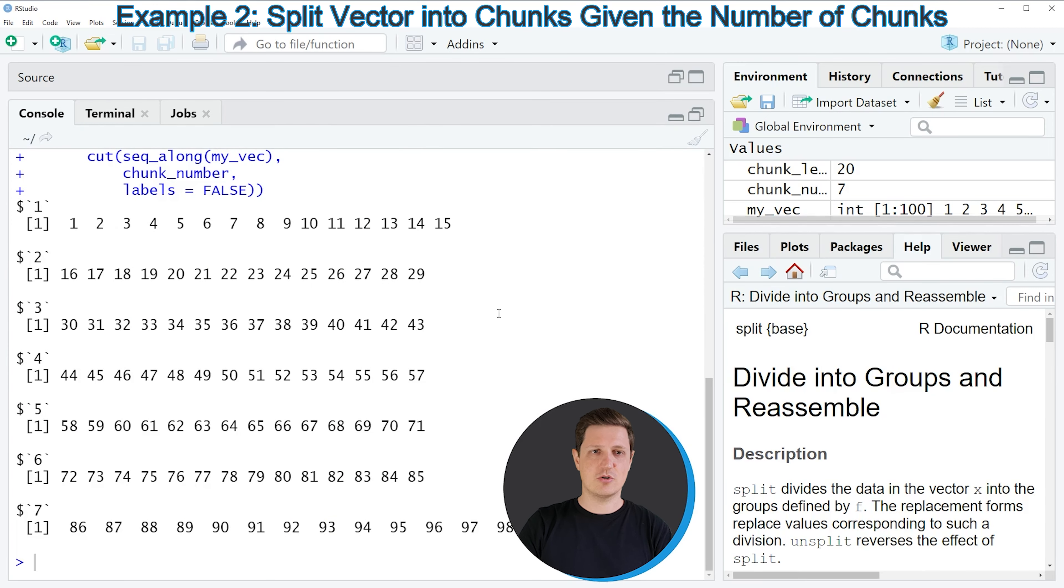And this time, this list consists of seven list elements, as we have defined in the data object chunk_number. As you can see, the number of elements within each chunk is obviously depending on the number of chunks that we have defined before.